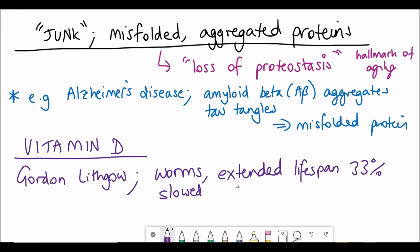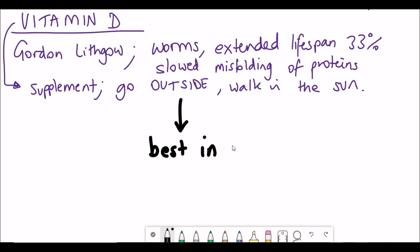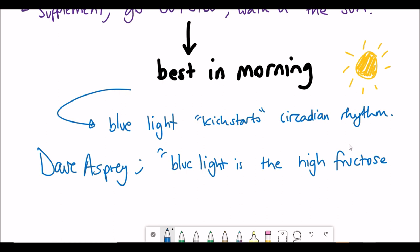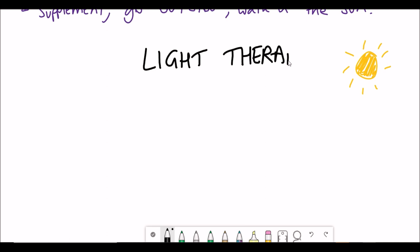One thing he discusses is the efficacy of taking vitamin D to prevent this misfolding, based on the research of Gordon Lithgow, who studied worms and found that by taking vitamin D the worms extended their lifespan, which reduced the rate of this misfolding. Without taking supplements, an obvious way to increase vitamin D is to spend more time outdoors. According to Dave, if you want to be superhuman, it's best to do this in the morning because of the stimulation of the circadian rhythm by blue light.